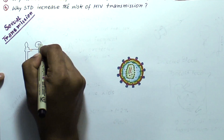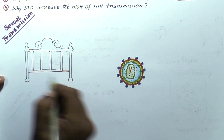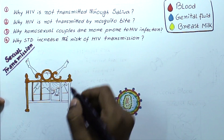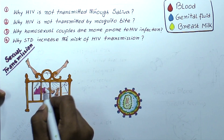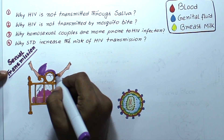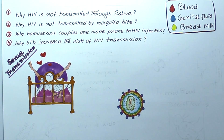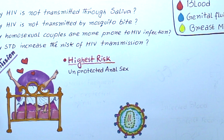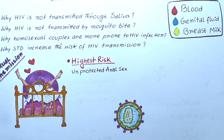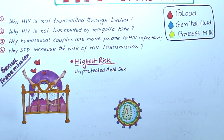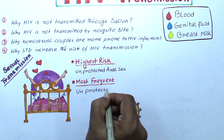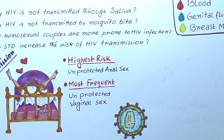Now let's discuss sexual transmission, which is the most common mode of transmission, due to unprotected vaginal sex, anal sex, or even oral sex. HIV can be transmitted by even casual contact of genital fluid with the mucous membrane. Unprotected anal sex by either a man or a woman is the highest risk sexual behavior, and unprotected vaginal sex is the second highest risk, though it is the most frequent mode of transmission.